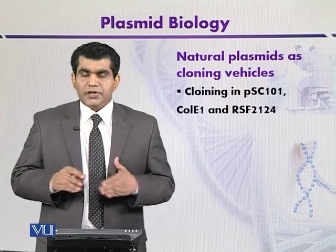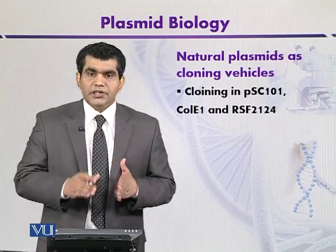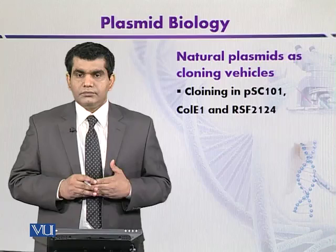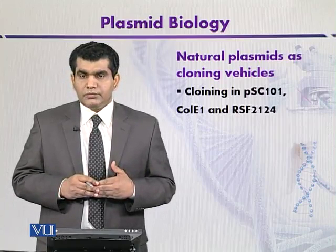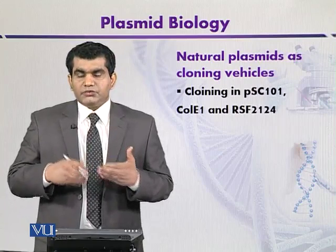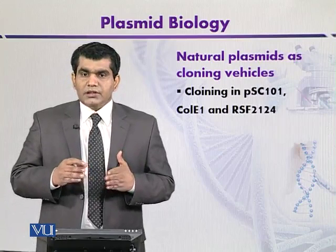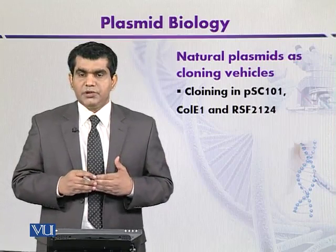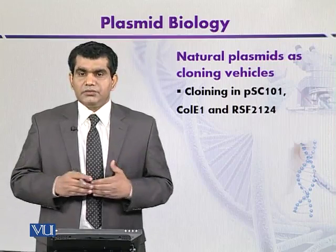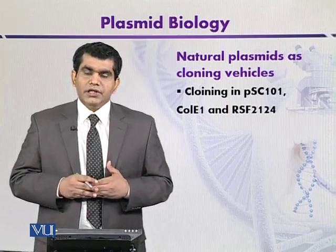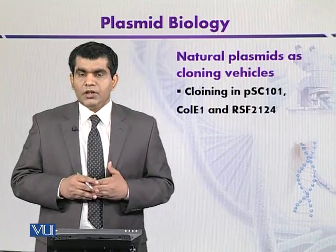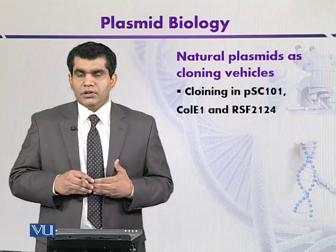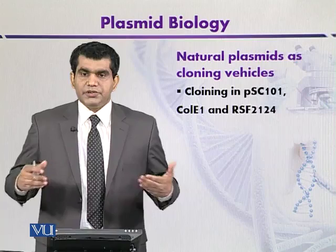The transformants are then selected on the basis of another trait, which is immunity to Colicin E1. However, there is a problem that screening transformants on the basis of immunity is not so simple. For this purpose, its derivative RSF2124 is best suited, because it contains an additional transposon that mediates resistance against ampicillin.